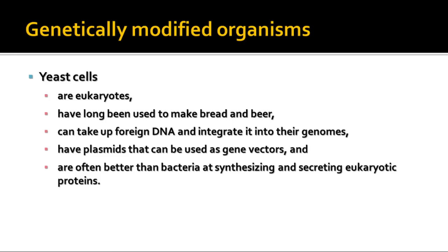Yeast cells can also be modified. They're eukaryotes, so a lot of times they can be used to handle DNA that would be more easily processed by a eukaryotic cell rather than a prokaryote. They also have plasmids that can be used as vectors, and sometimes they're better at synthesizing eukaryotic proteins than bacteria because they have the eukaryotic mechanisms within their cells.